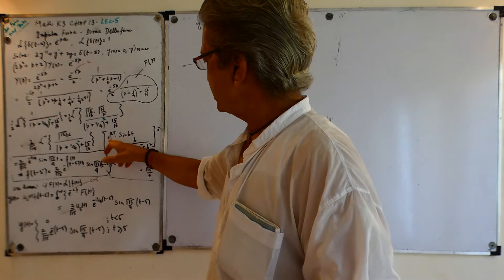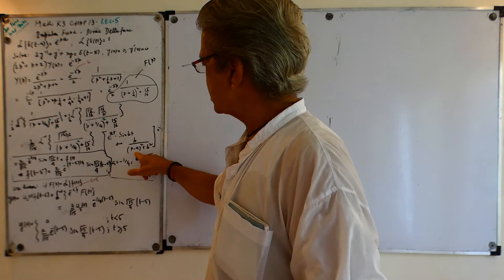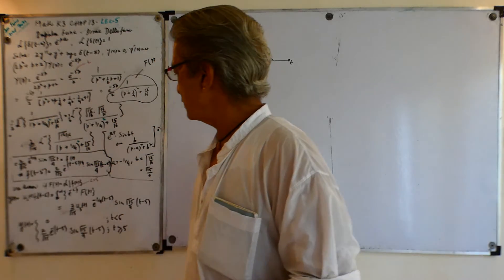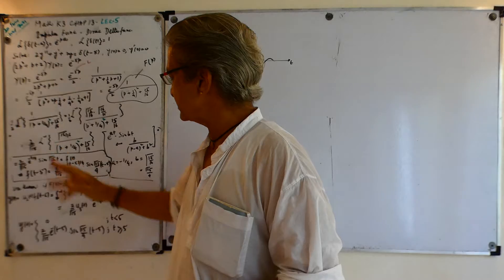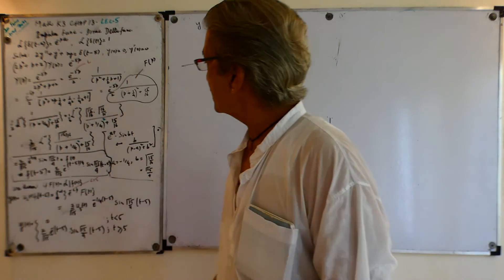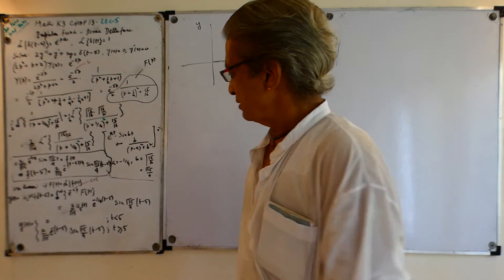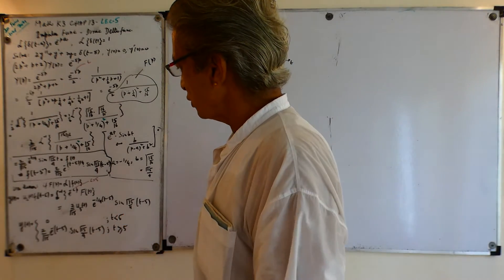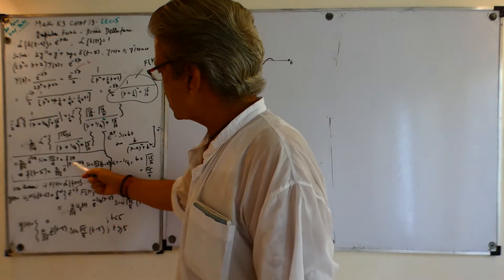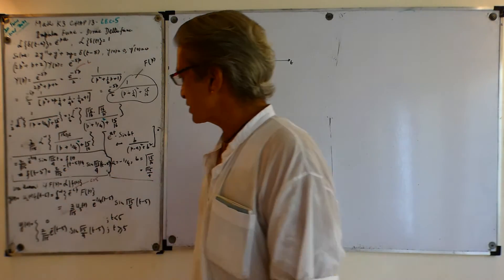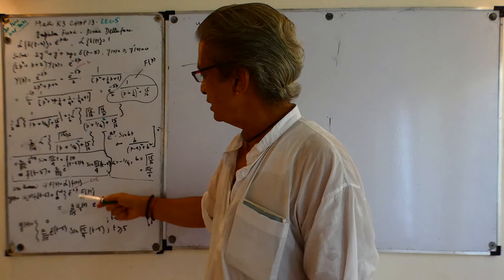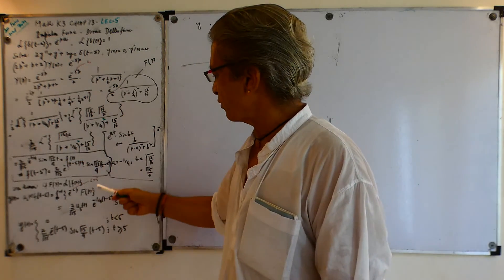So the inverse Laplace transform of F(P) is f(t) = (2/√15) · e^(−t/4) · sin(√15/4 · t), where a = −1/4 and B = √15/4. But to fit into the shifting formula I want f(t − c) where c = 5, so I replace t by t − 5. That gives f(t − 5) = (2/√15) · e^(−(t−5)/4) · sin(√15/4 · (t − 5)).